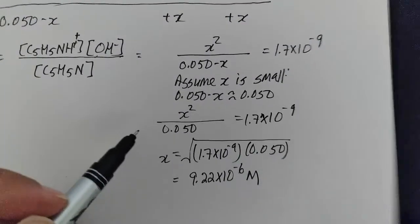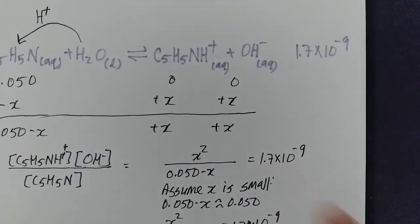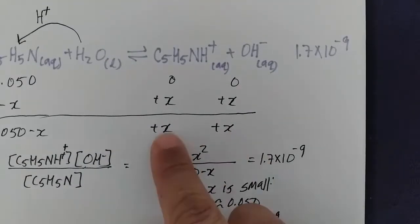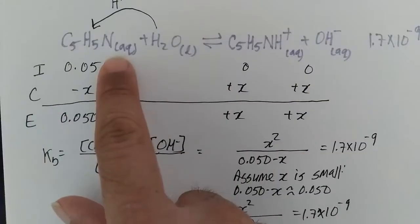That's X. But what does X really symbolize? Okay, X symbolizes my concentration of OH minus and my concentration of this conjugate acid to this weak base.